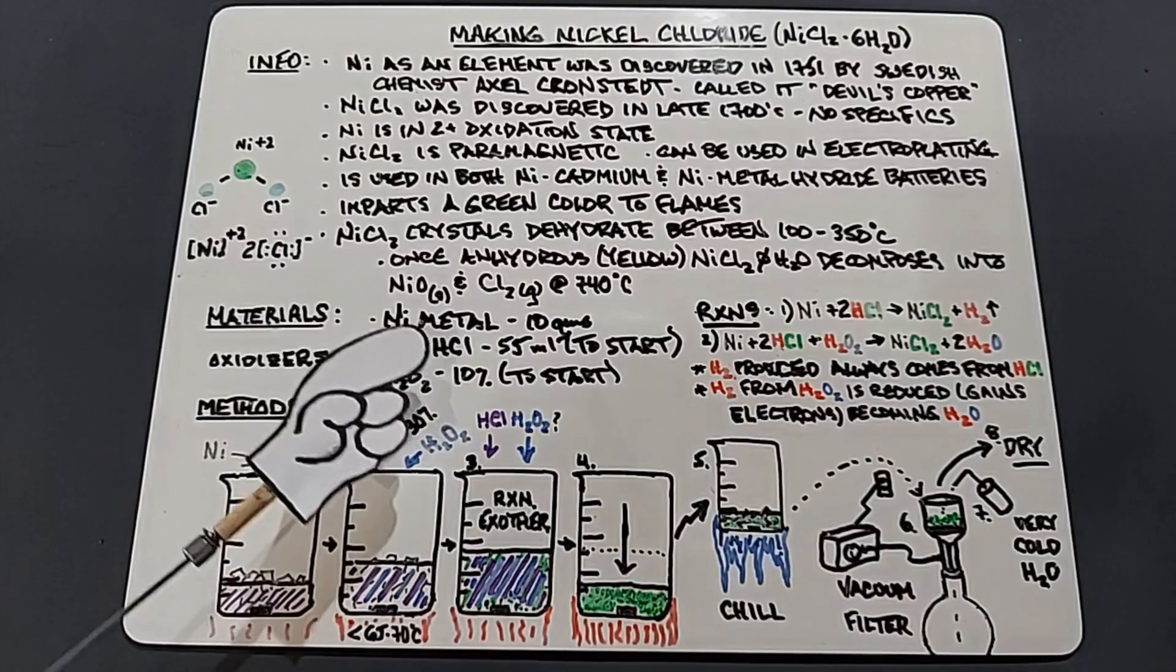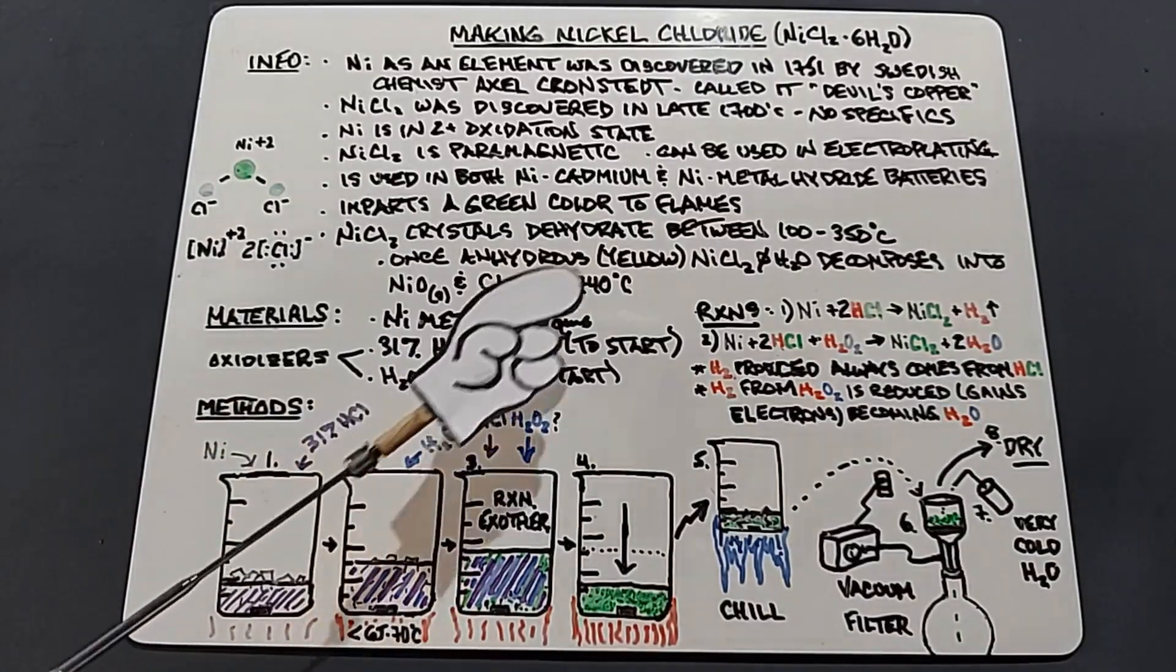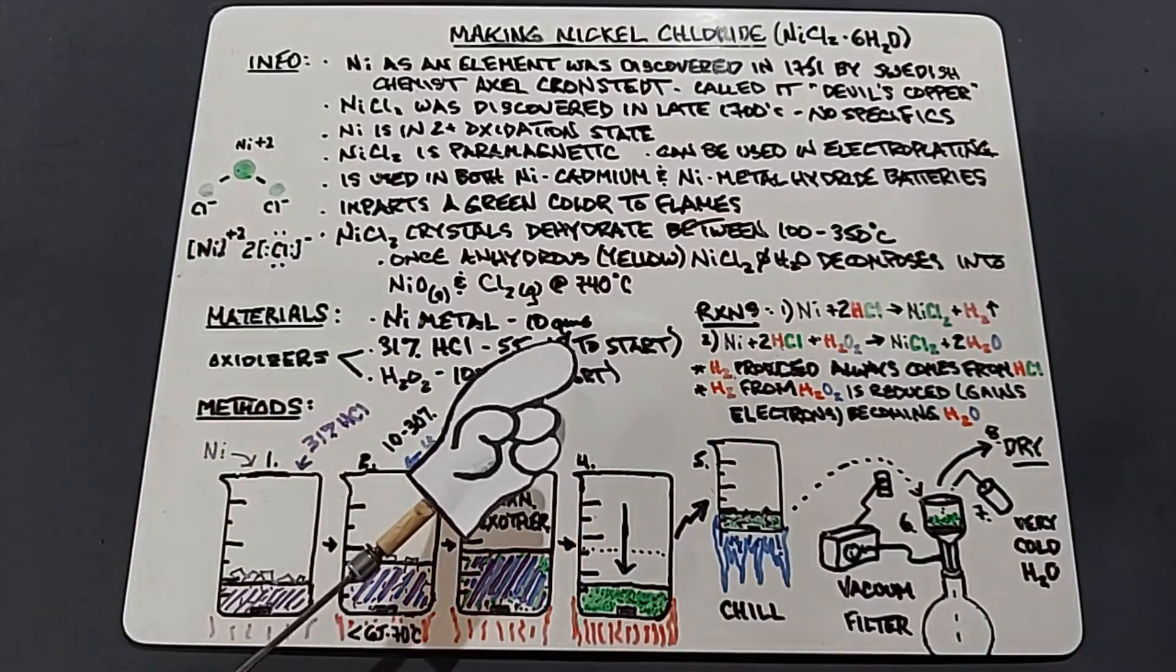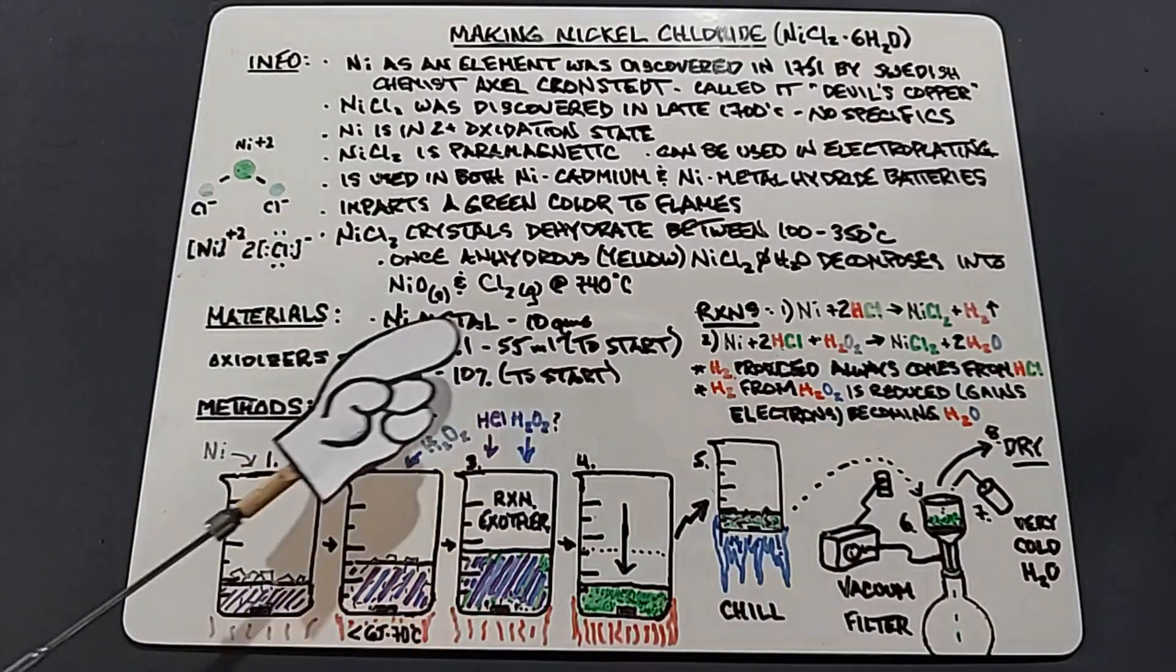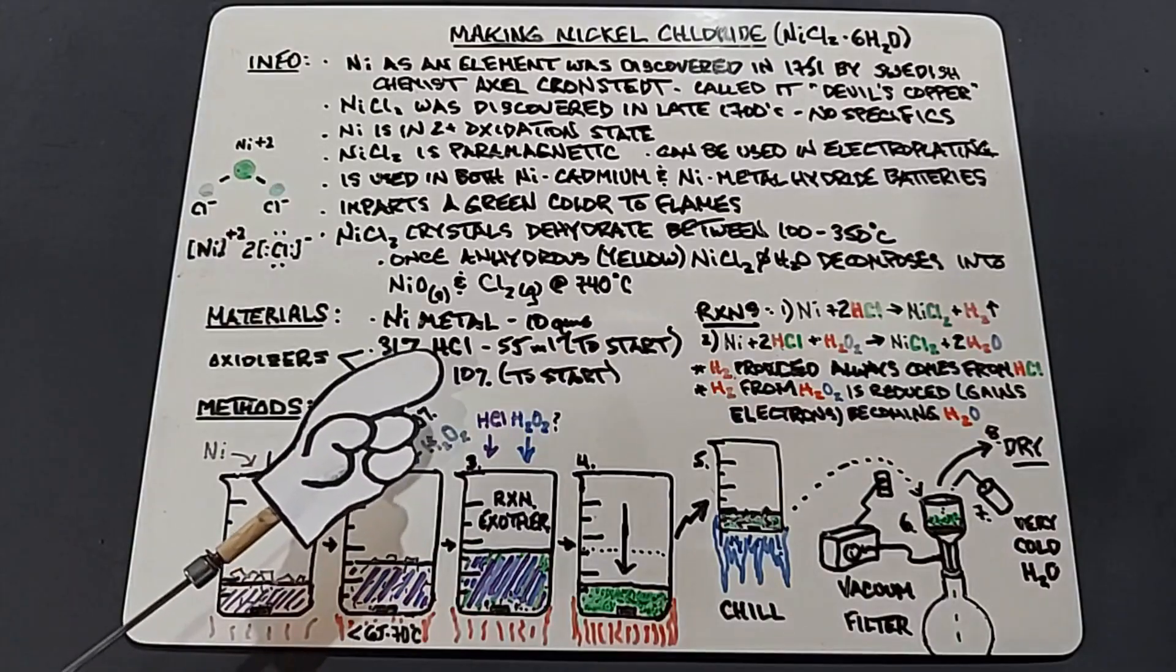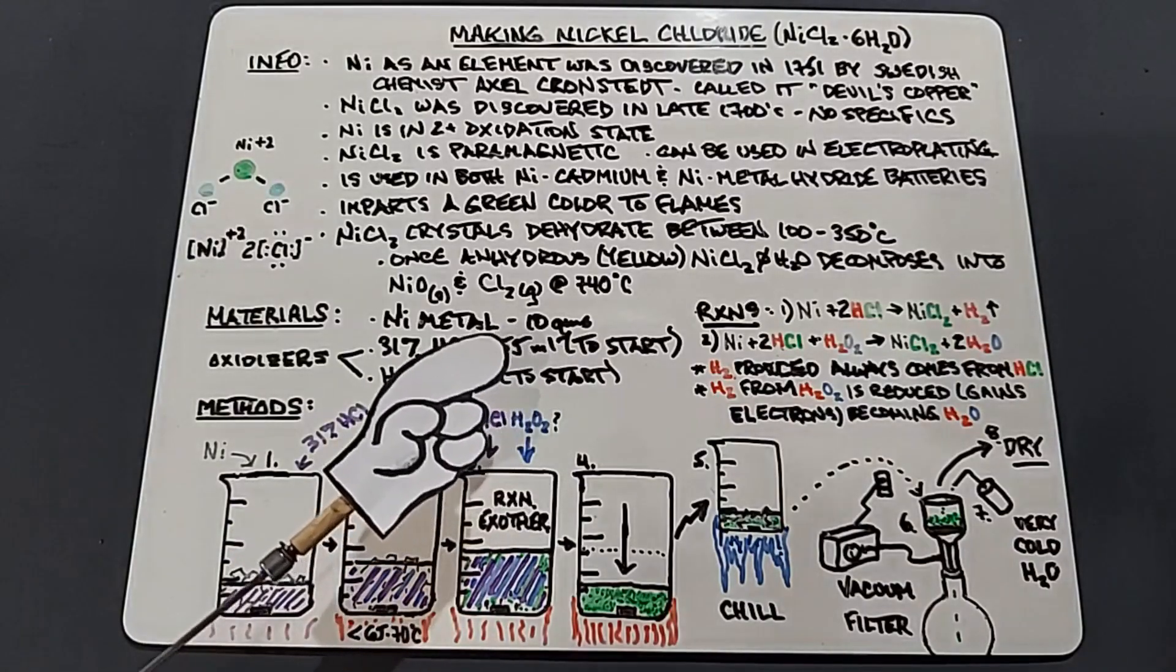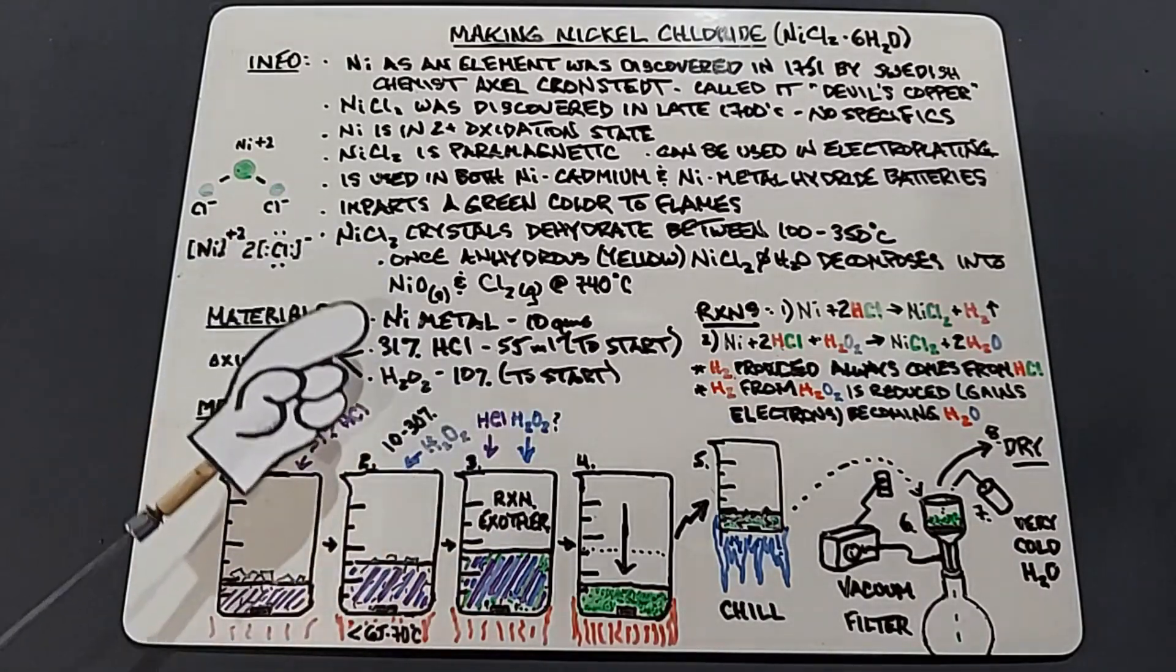We also need 31% hydrochloric acid, 55 milliliters to start, and that of course is always to start because often you need to add more. And hydrogen peroxide 10%, also to start, meaning I'll probably go up in percentage if 10% doesn't seem to be doing the trick. Nickel is hard to break down. These, of course, are the two oxidizers that we'll be using to break down the nickel and make the nickel chloride.